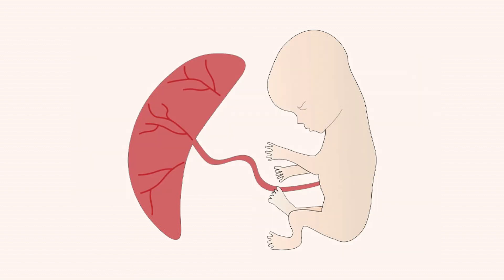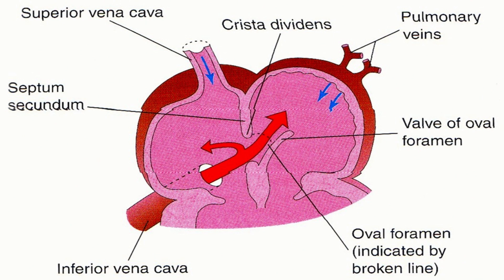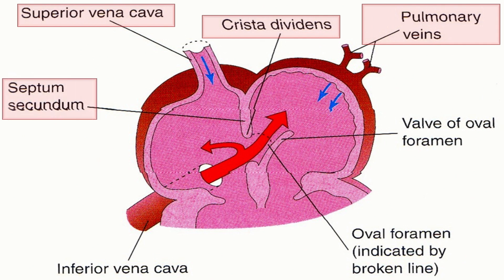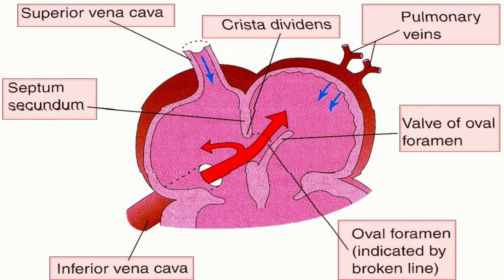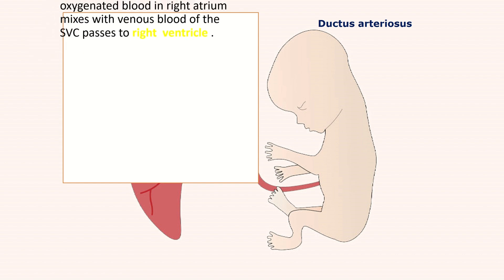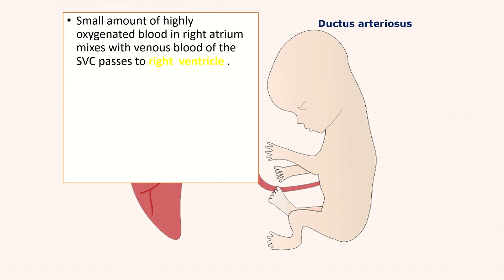Here we have an embryonic heart showing the superior vena cava, crista dividens, pulmonary veins, septum secundum, valve of foramen ovale, inferior vena cava, and oval foramen indicated by a broken line. A small amount of highly oxygenated blood in the right atrium mixes with the venous blood of the superior vena cava that passes to the right ventricle.